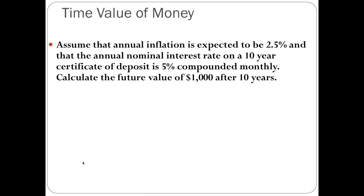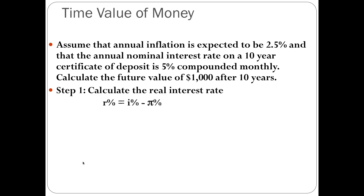Now let's look at an example with the compound interest formula. Assume annual inflation is expected to be 2.5% and the annual nominal interest rate on a 10-year certificate of deposit is 5%, compounded monthly. We'll calculate the future value of $1,000 after 10 years. The first step is to calculate the real interest rate: 5% minus 2.5% equals 2.5%, expressed as a decimal that is 0.025.